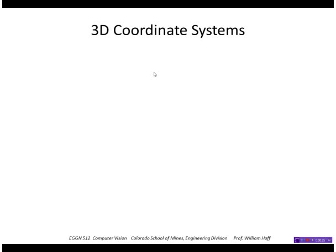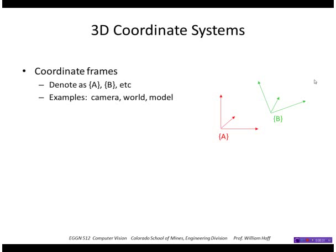3D coordinate systems have XYZ coordinate axes, unit vectors. I'm going to denote them as frame A in brackets here, frame B in brackets here. These could be things attached to the camera, the world, or a model that you're trying to locate.